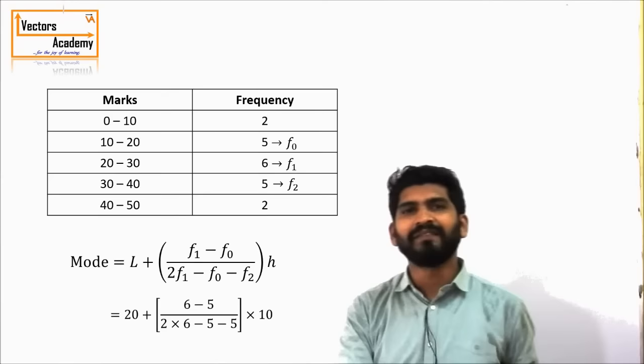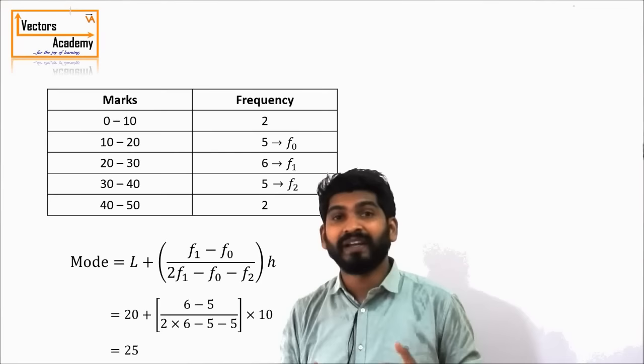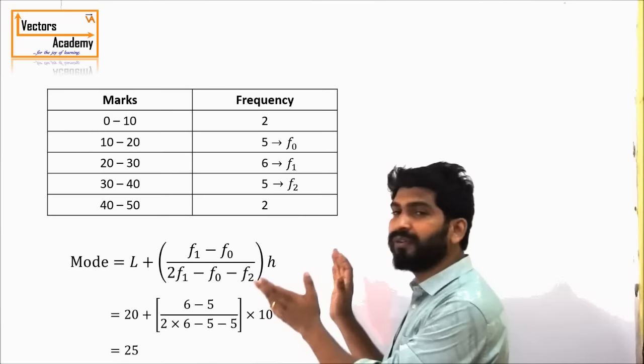The answer comes out to be 25. So this is how we calculate mode. Today we have seen how to calculate mean, median, and mode for a larger number of data, or for grouped frequency data. Thank you.